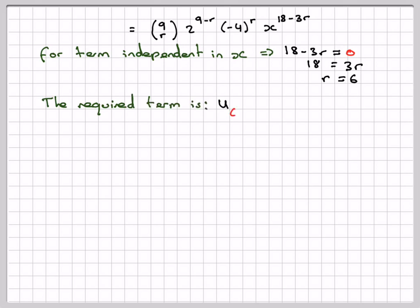The required term will be u to the 6 plus 1, 9c6, 2 to the 9 minus 6, minus 4 to the power of 6. That becomes 9c6, 2 cubed, now it's 4 because minus to an even power disappears, so it's 4 to the 6.